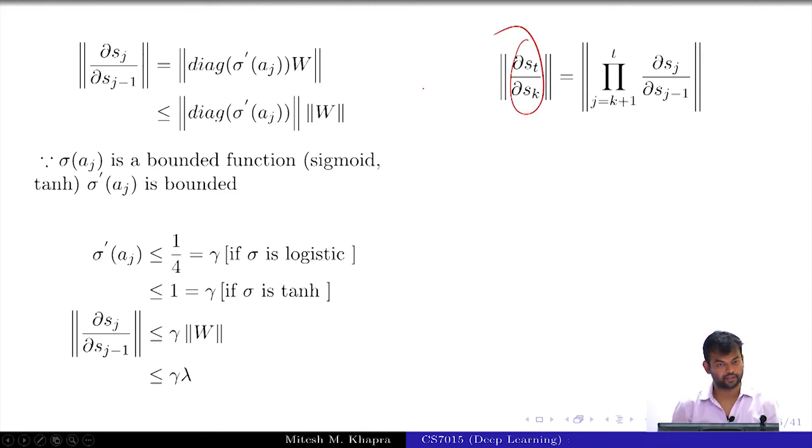Now, let us look at the product. So, this is the quantity that I was interested in and this is actually a product of various such quantities. So, what is it going to be now? Can you go to the next step? It will be gamma into lambda raised to t minus k. It basically has, this product has t minus k terms. So, it will be gamma lambda raised to t minus k.